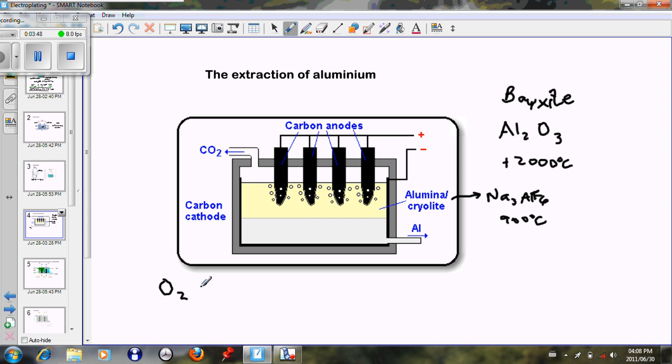This oxygen joins with the carbon rods. What happens is the oxygen that's formed reacts with the carbon rods to form carbon dioxide. This is actually what happens at these rods.